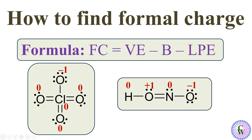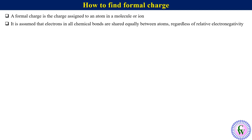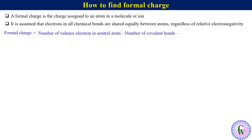Hello and welcome to my YouTube channel Chemviz. In this video we are going to discuss the way of finding formal charge. A formal charge is the charge assigned to an atom in a molecule or ion. While calculating formal charge, it is assumed that electrons in all chemical bonds are shared equally between atoms regardless of relative electronegativity. The formula is: Fc = Ve − B − Lpe, where Ve is the number of valence electrons in the neutral atom, B is the number of covalent bonds, and Lpe is the number of electrons as lone pairs.